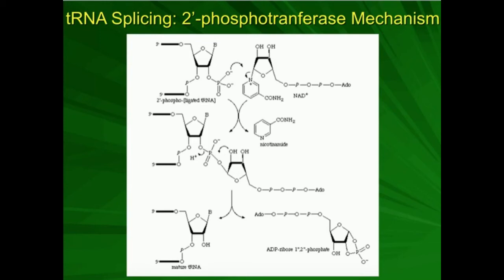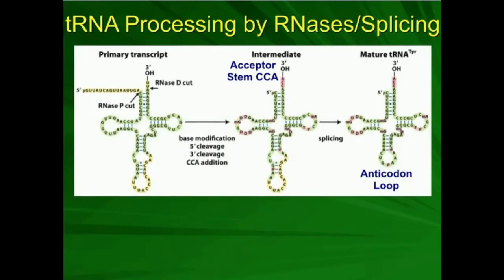And that's what gets rid of the phosphate on the 2' position. So that's 2' phosphotransferase, and then you get this ADP ribose 1' 2' phosphate. This will be ultimately removed by an action of a cyclic phosphodiesterase. It's going to be hydrolyzed, and then this will ultimately be recycled. But that's going to give us our mature tRNA, and that's what we see right here.